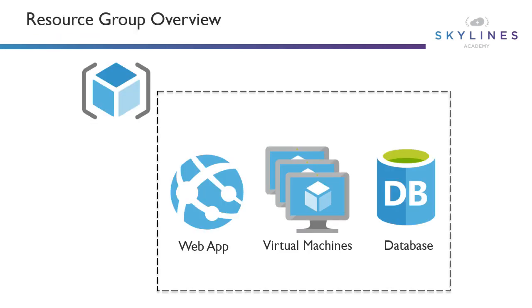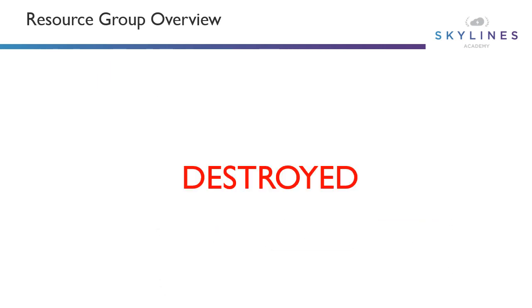One of the fundamental concepts you need to know about are Azure Resource Groups, because they're where you put all of your different objects. They're essentially a container for your web apps, virtual machines, databases — any service deployed in the course. When you delete the resource group, every single thing inside is destroyed. It's helpful for removing all components of applications that share the same lifecycle, but you need to be careful.